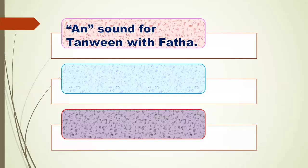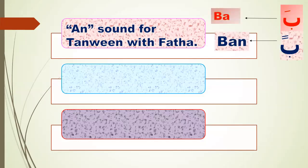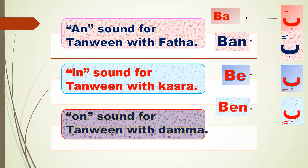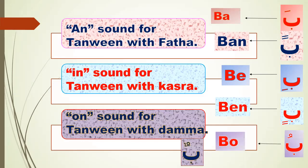N-sound for tanween with fatha. Example: Ba-fatha, ba. Ba-fathatan, ban. N-sound for tanween with kasra: Ba-kasra, bi. Ba-kasratan, ban. N-sound for tanween with damma: Ba-damma, bu. Ba-dammatan, ban.